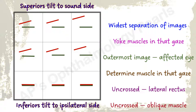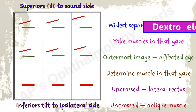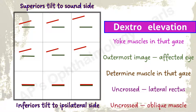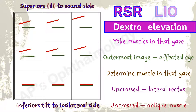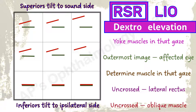Maximum separation of images is in dextro elevation. The yoke muscles acting in dextro elevation are the right superior rectus and the left inferior oblique. Red is the outermost image, so the right eye is involved — there is a right superior rectus palsy. This is a crossed diplopia, so the rectus checks out. The tilt is towards the sound left side, so superior checks out.